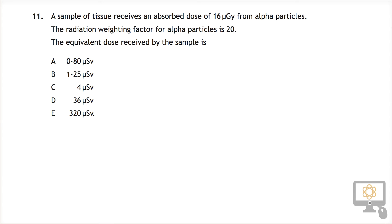So we're going to look now at question number 11 from the National 5 Physics 2015 paper. A sample of tissue receives an absorbed dose of 16 micrograys from alpha particles.